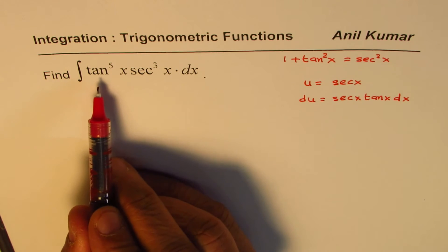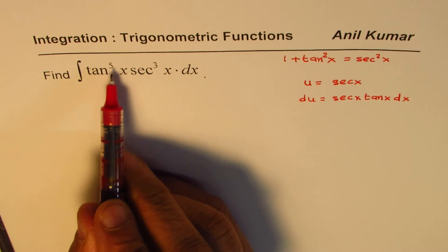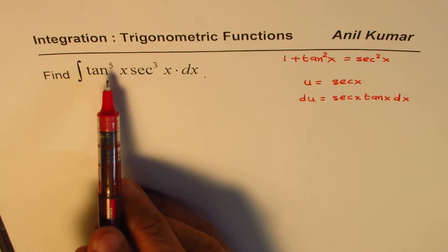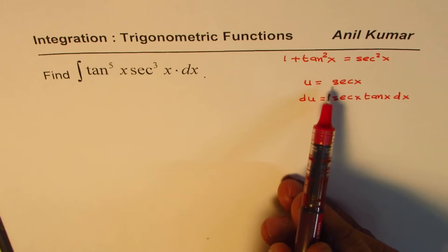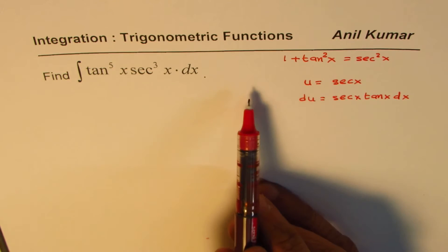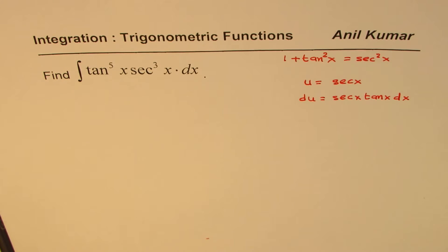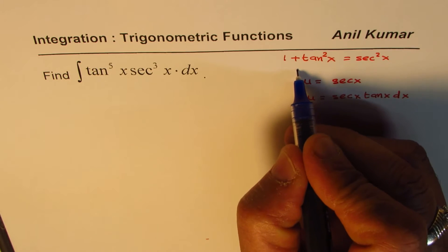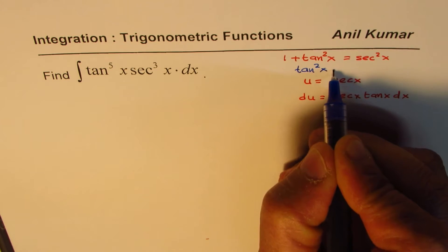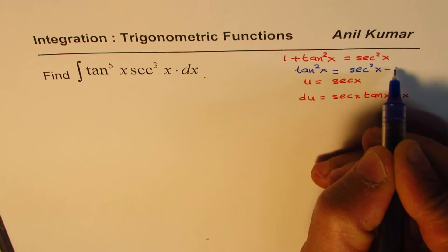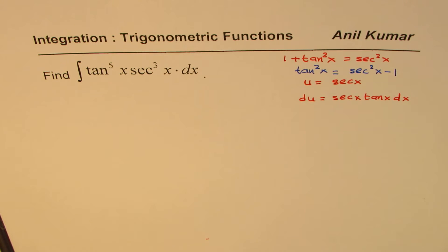Now if we factor out tan x secant x then both these exponents which are odd will become even for us. Now once they become even, since we have made a substitution or we want to make a substitution of secant x, we want to convert tan into secant x. So that is a strategy. So you could write tan square x as equal to secant square x minus 1. So that is the other strategy for us to solve this particular question.